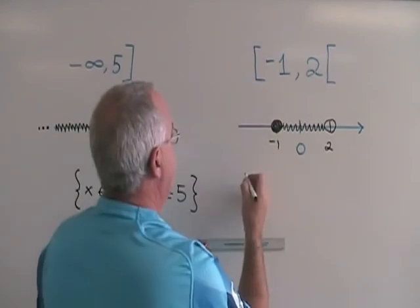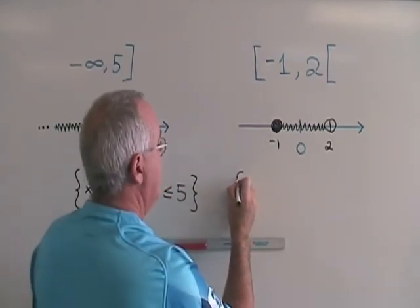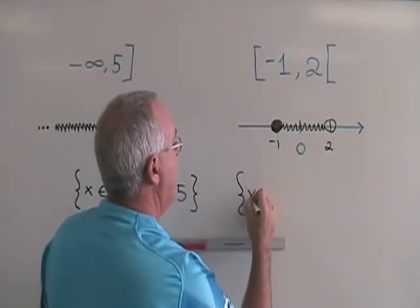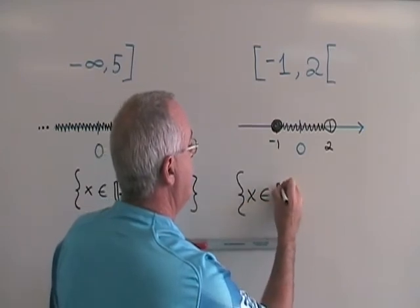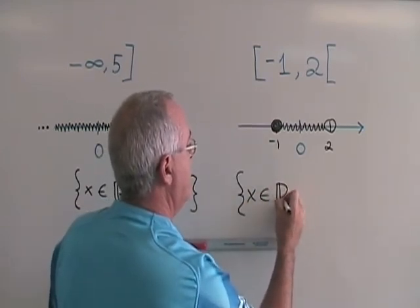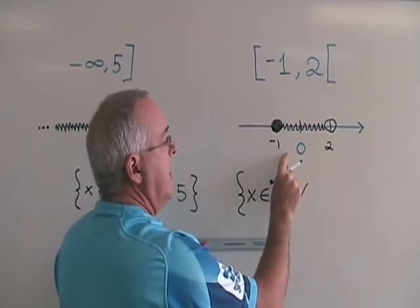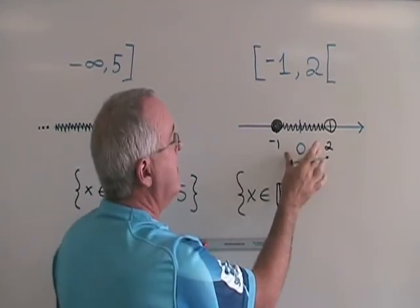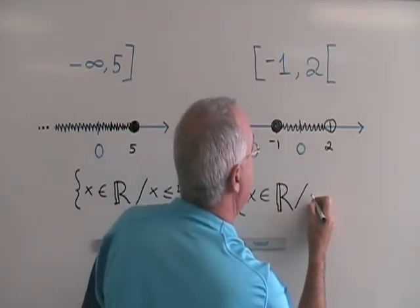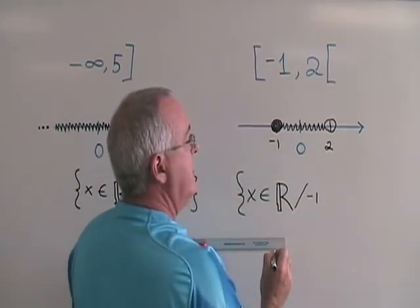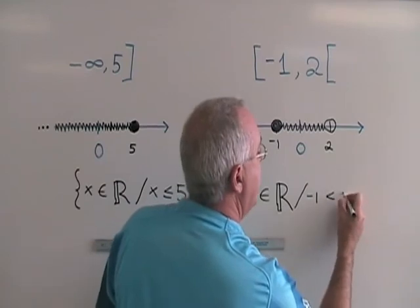This one starts the same way. We open our brace. We write x is an element of real numbers, such that the notation that we need when we are showing a region in between two limits is the lower limit, negative 1 in this case, is less than x.